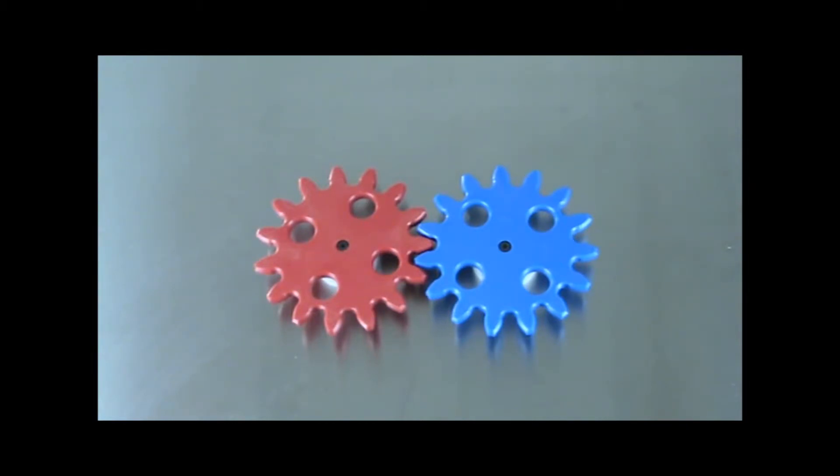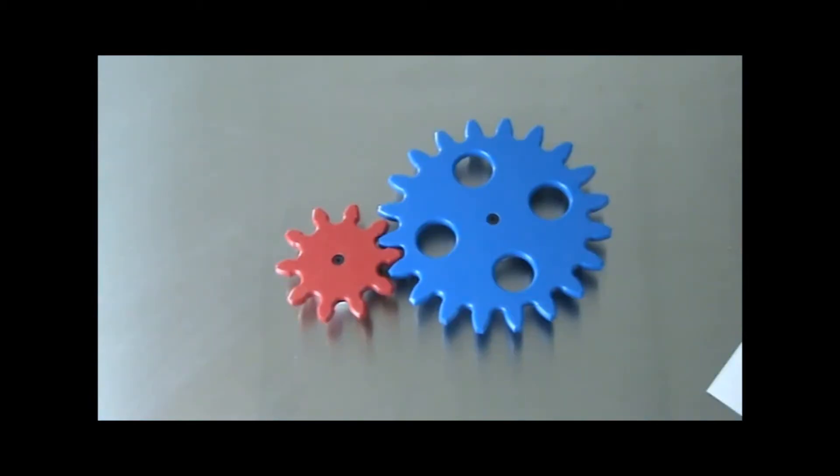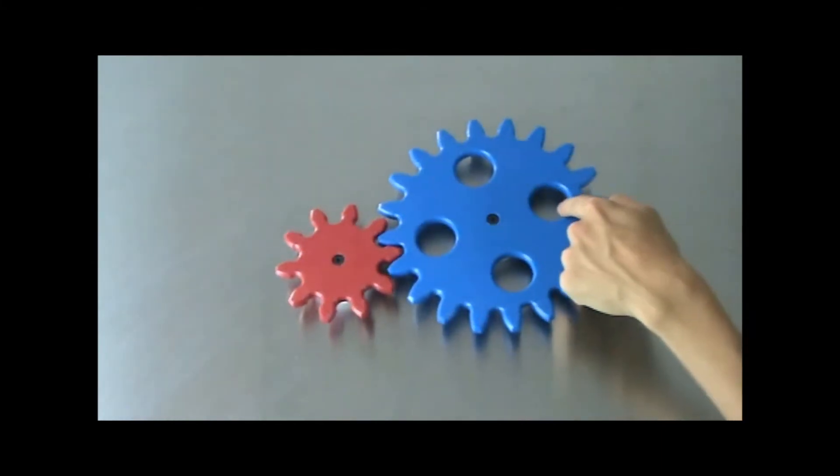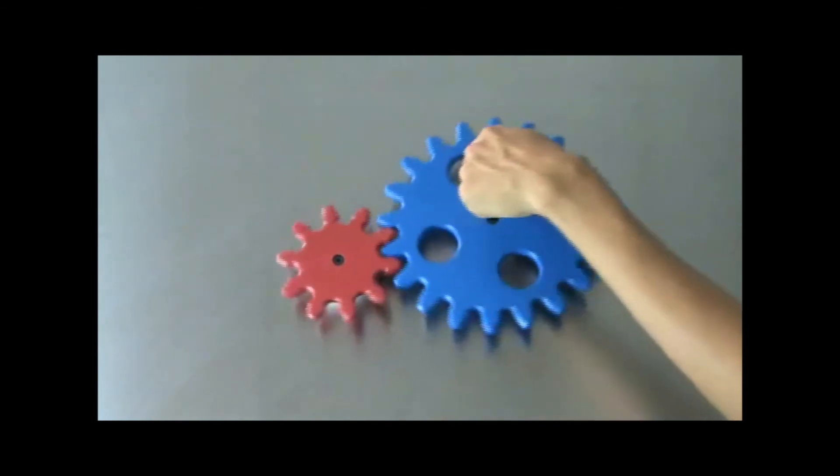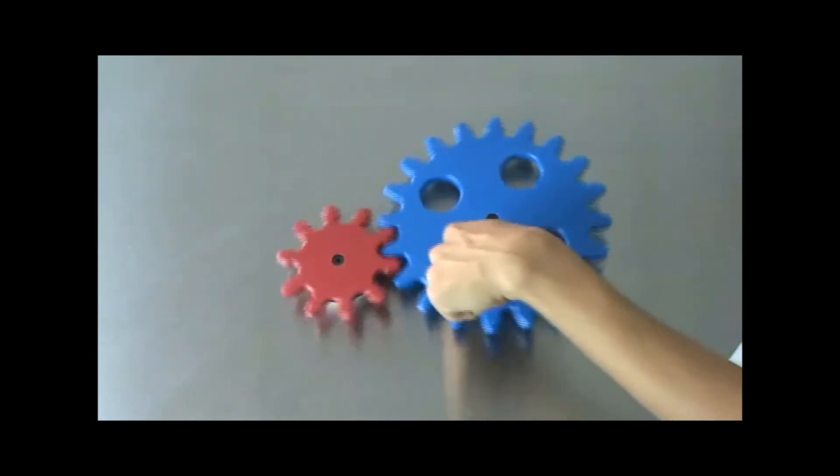To accomplish this we need to alter the size of our gear. Here I have a large gear with 20 teeth and a small gear with 10 teeth. Notice that as I spin the large gear the small gear spins more quickly.